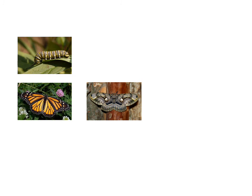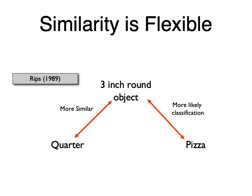One of my favorite experiments is by Lance Rips in the 1980s, examining the difference between featural similarity and classification. One example: consider a three-inch round object — about the size of a Tim Hortons coffee cup lid or a bar coaster. Is that three-inch round object more similar to a quarter or a pizza? A US quarter is about an inch across, closer in size to three inches than a pizza is.